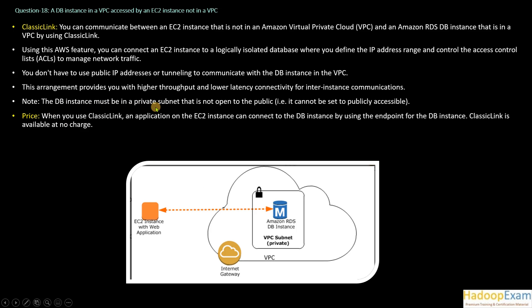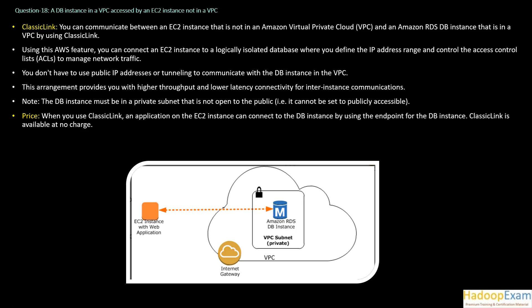The DB instance must be in a private subnet that is not open to the public — it cannot be set publicly accessible if you want to use Classic Link. When you use Classic Link, an application on the EC2 instance can connect to the DB instance using the endpoint of the DB instance. Classic Link is available at no charge — it's absolutely free from Amazon. However, this kind of infrastructure ideally should not be created for new environments; you should always have everything in the VPC with corresponding subnets and availability zones.